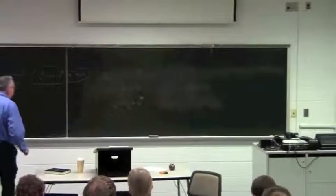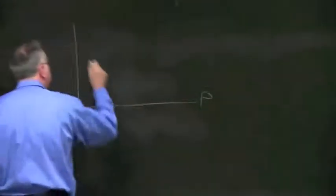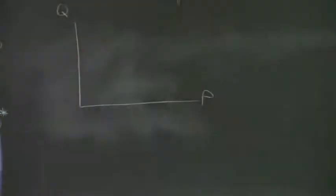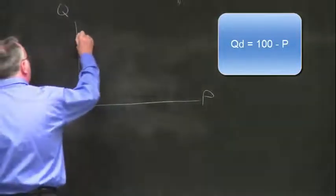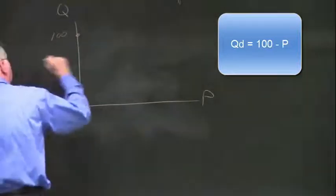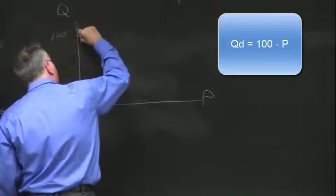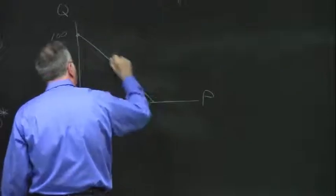Let's look at this in the diagram. Graphing quantity on the vertical axis and price on the horizontal axis, it'll look like this. Notice Q could stand for either quantity demanded or quantity supplied — Q could stand for both. So the demand curve looks like this: the vertical intercept would be 100, the slope is minus one, so it comes down like this. Where will it cross the p-axis?